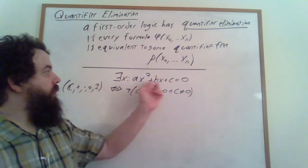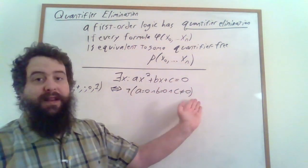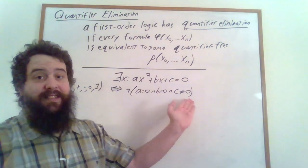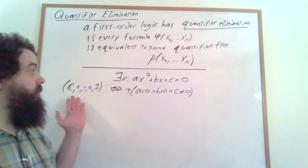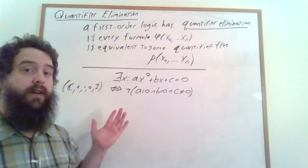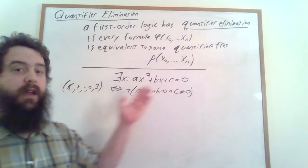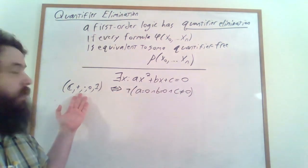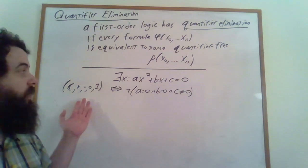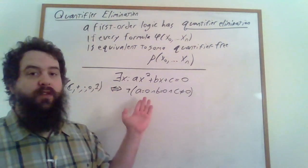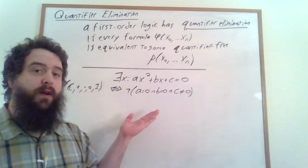It turns out this isn't a special case. This particular structure has quantifier elimination. Any sort of formula we could imagine constructing within the first-order logic of the complex numbers with addition and multiplication can be translated into an equivalent formula in just the free variables that doesn't have any quantifiers in it.